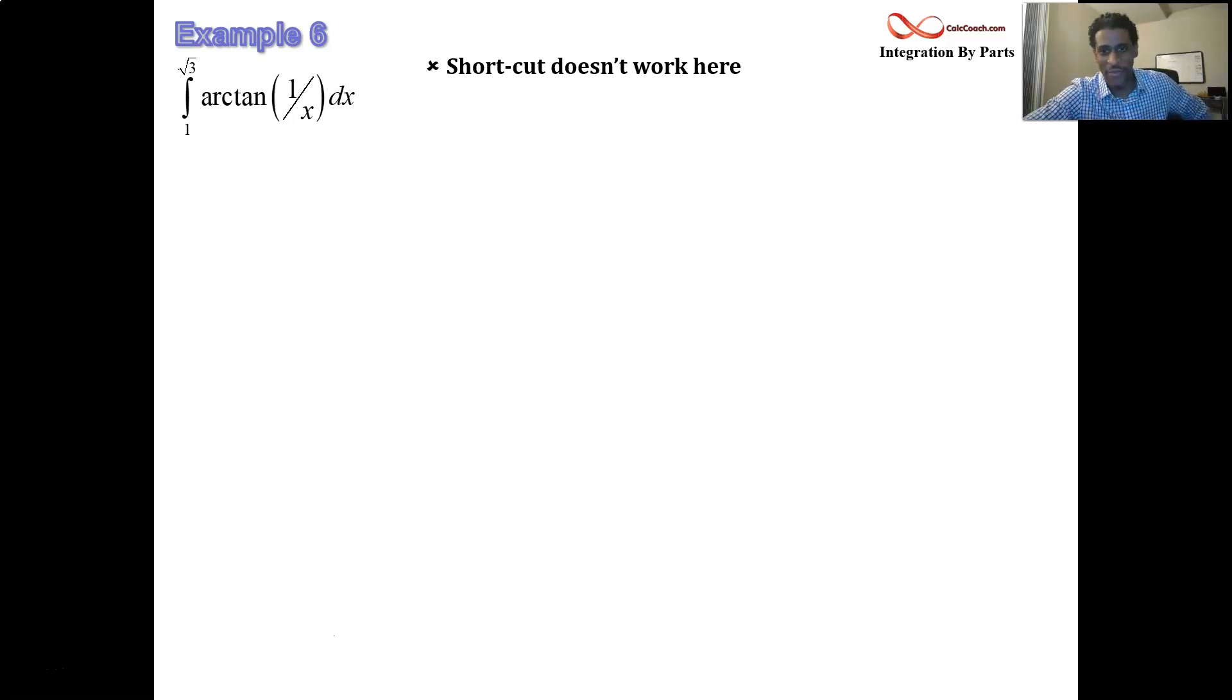Arctan is an inverse trig function. I like to write it in the arctan format as opposed to tan to the tan minus 1 symbol for inverse. And so u is equal to the arctan of 1 over x, leaving dv to be officially 1 dx. I didn't put the 1 in there this time, but there's a 1 there.